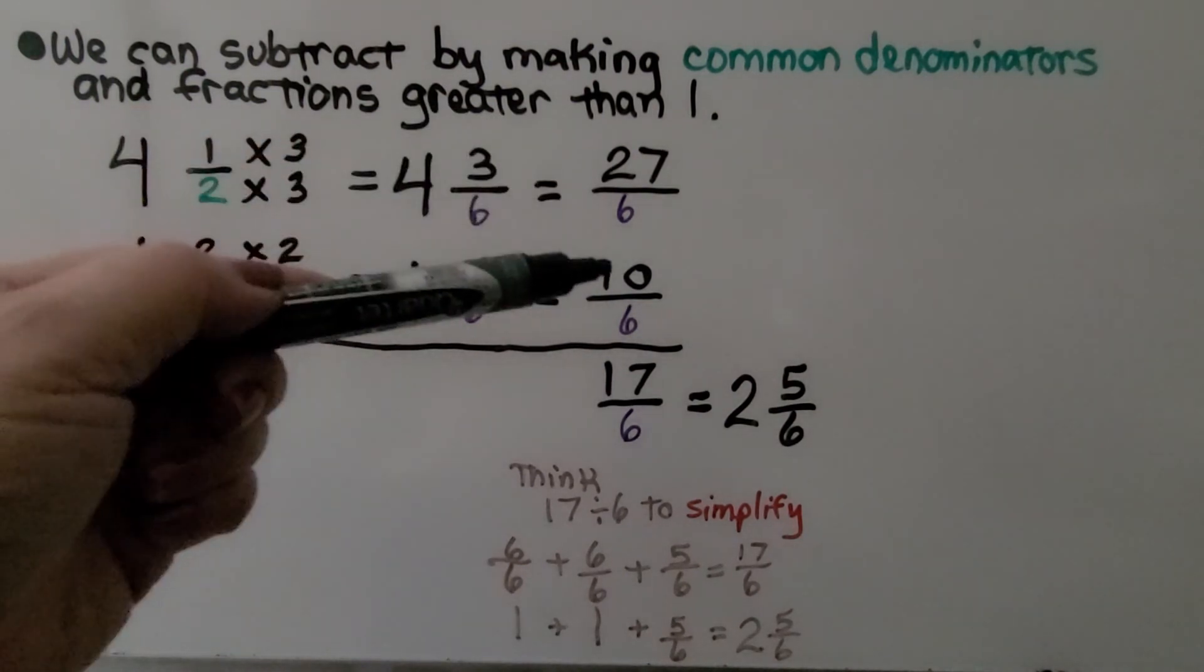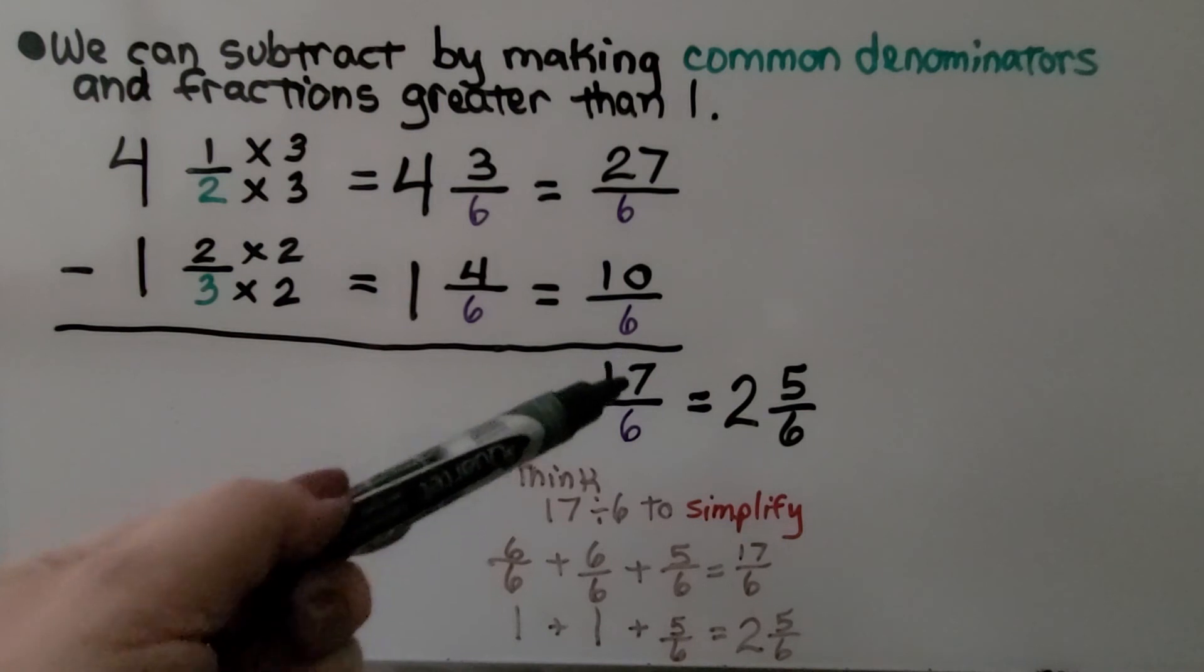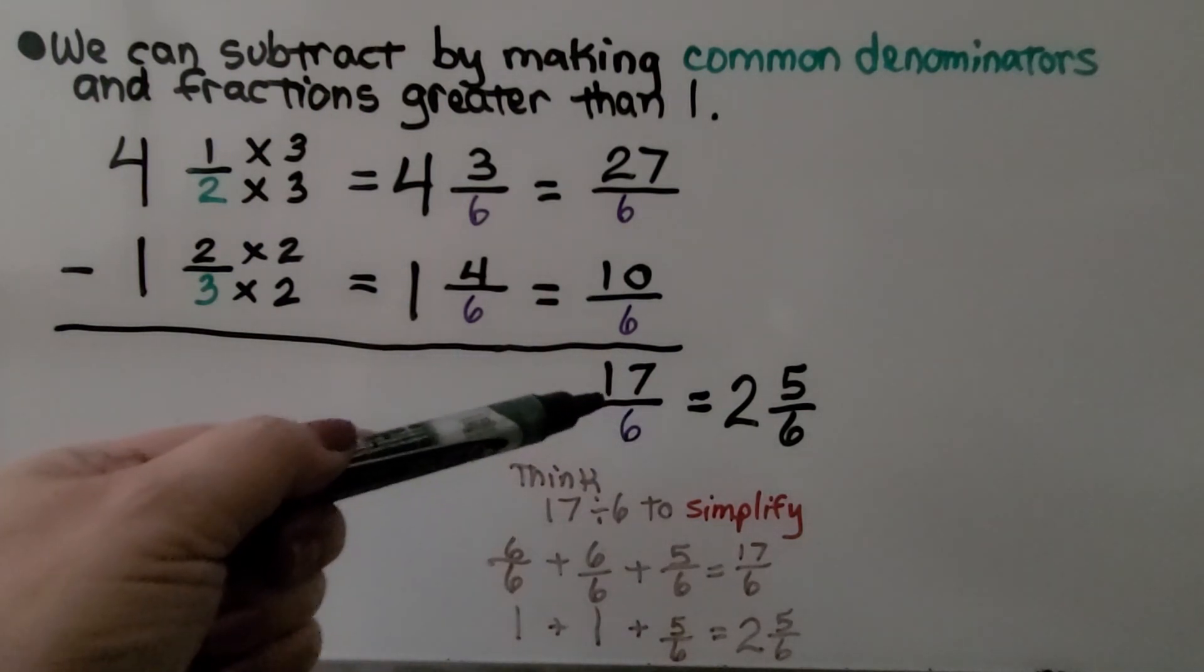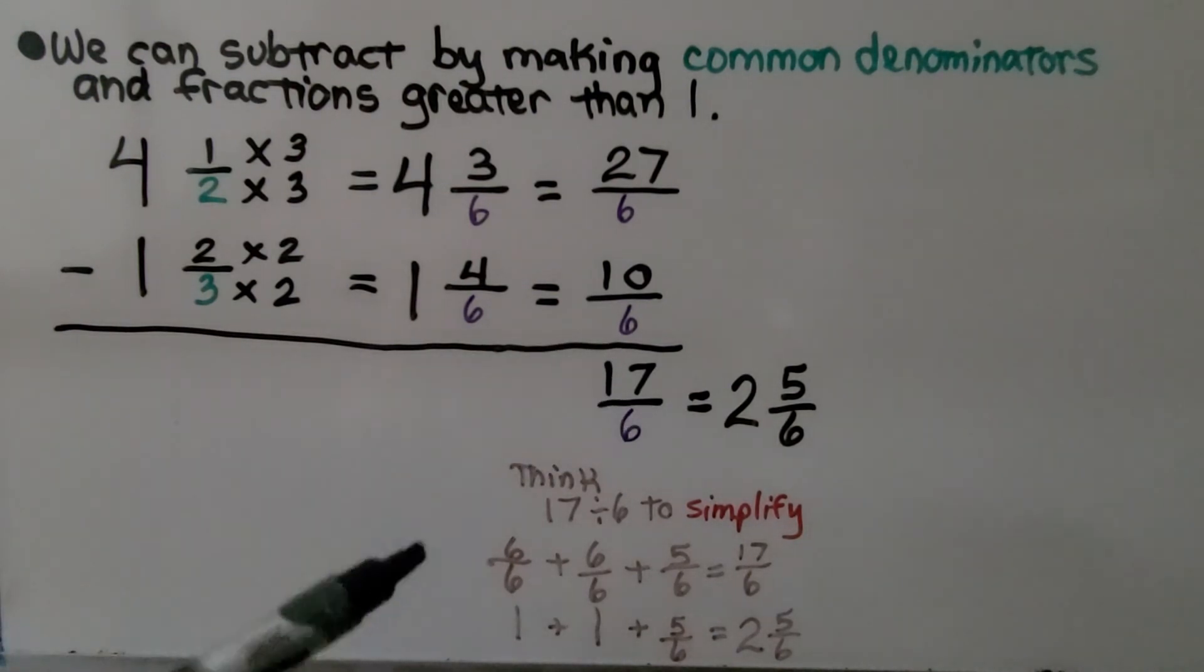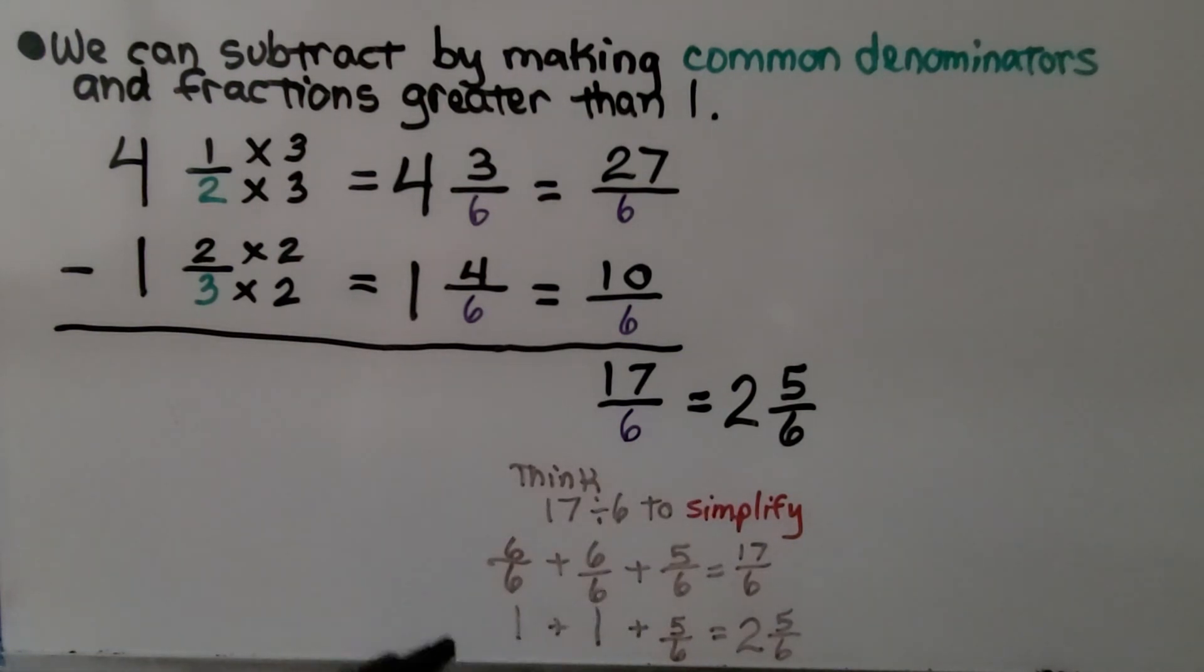Now we can do 27 minus 10 because we're doing subtraction. That's going to give us 17/6. Now we can simplify it. We can think of the fraction bar as a division sign and think 17 divided by 6. That would be 6/6 plus another 6/6 plus 5/6. 6 plus 6 is 12 plus 5 more is 17. So we would have 1 plus 1 plus 5/6. It's 2 and 5/6.